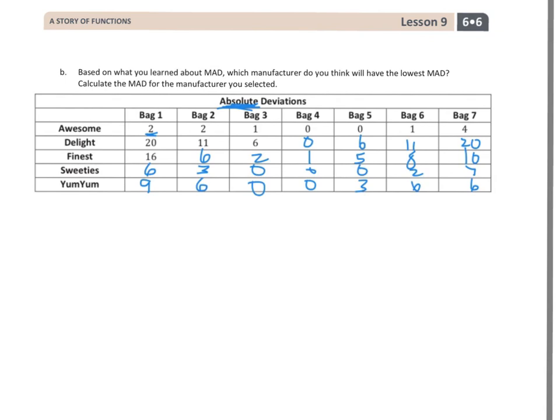So, I want to find the one that has the lowest. Meaning, if I could do a calculation to find that out by adding up all of these values across for YumYum and doing the same for Sweeties, Finest, Delight, and Awesome. But, what I can actually look for, which will help me out a lot more, is which one has the lowest numbers? And, I see Awesome has 2, 2, 1, 1, 4.